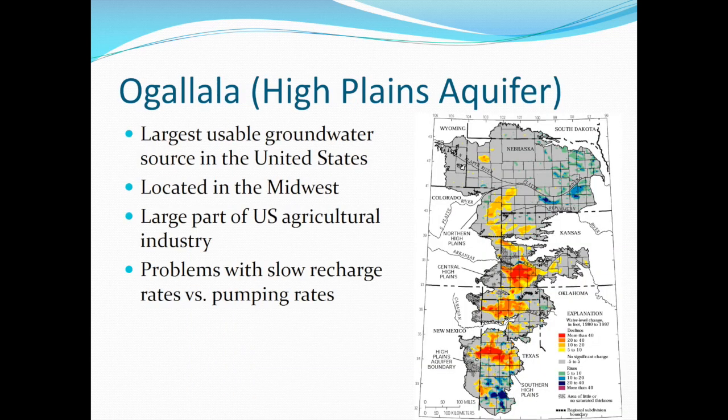However, just because unconfined aquifers have a faster recharge rate doesn't mean that over-pumping doesn't occur. For example, let's look at the High Plains aquifer, which is the largest usable groundwater source in the United States. This aquifer has recharge rates that are slower than the pumping rates, which results in depletion of the aquifer. This diagram illustrates the depletion over a 17-year period. Notice how the aquifer has experienced more declines than rises.